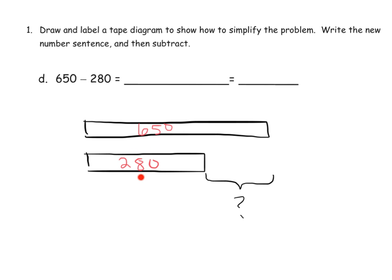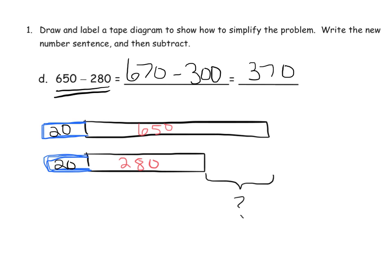So let's bump this number up to a milestone number, which would be 300. So I'm going to stick on the same amount to each tape diagram. And I'm going to add 20 to each tape diagram, because that changes my 280 to 300. Now my gap, which is the answer, doesn't change. So the answer is still going to stay the same. But now the problem becomes 670 minus 300, which when we subtract, that gives us 370. Which means this problem, 650 minus 280, is also 370.